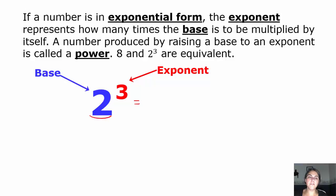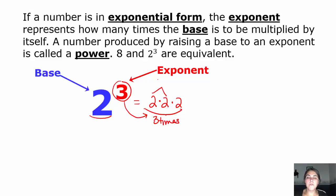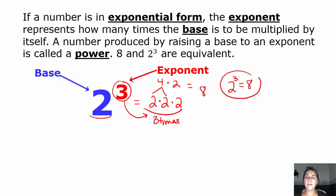So in this case, the base is 2 and the exponent is 3. It says we'll multiply 2 by itself 3 times. We can work that out: 2 times 2 is 4, times 2 is 8. That means 2 to the third power is 8. So 8 is a power of 2.